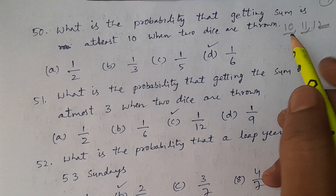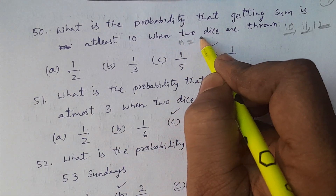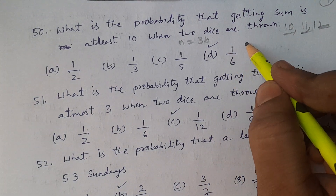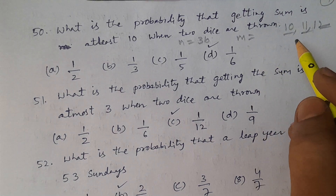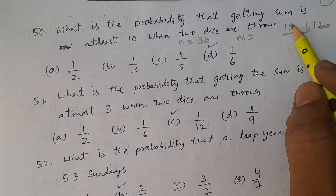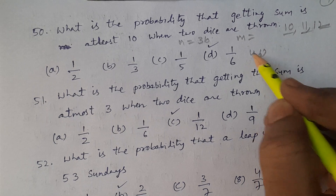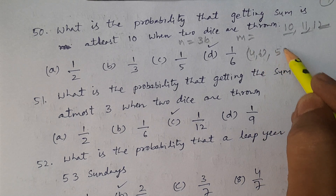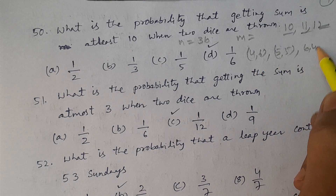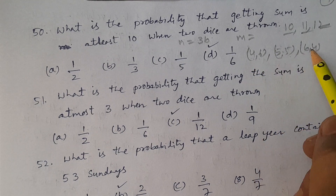The total number of outcomes n equals 6 squared, which is 36. For the favorable outcomes, when the sum is 10, the combinations are (4,6), (5,5), and (6,4) — that gives 3 outcomes.